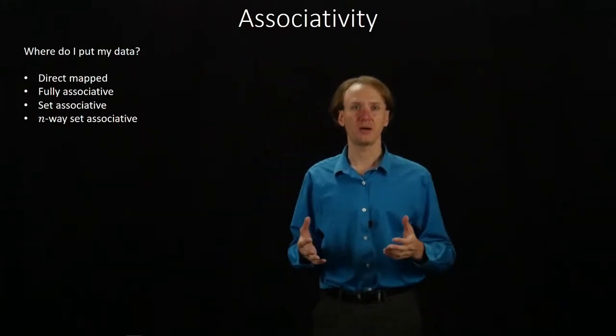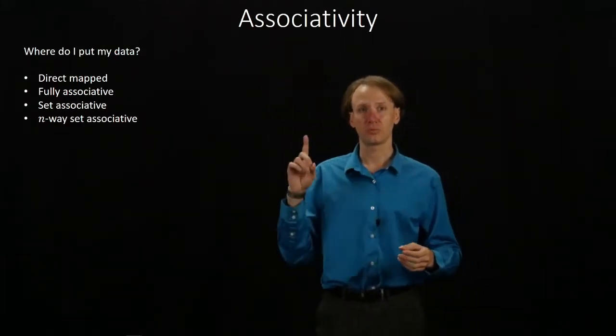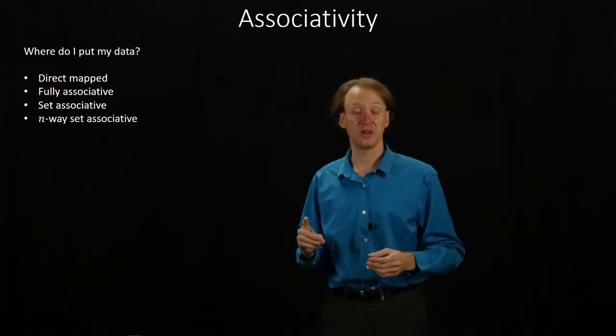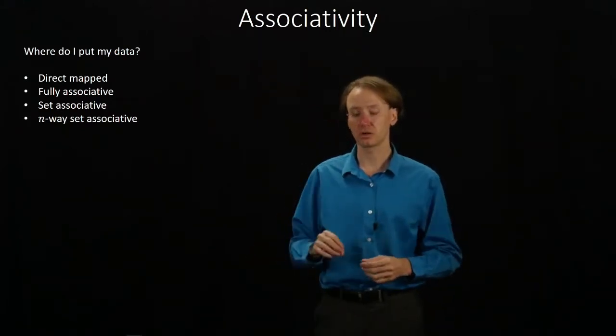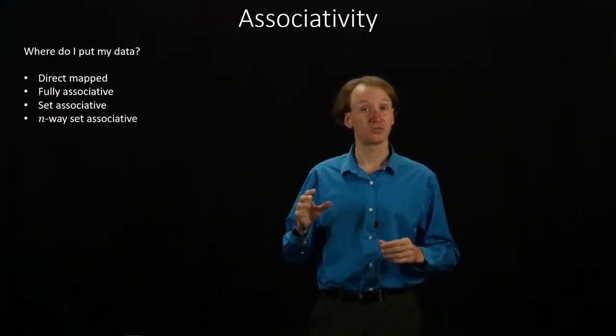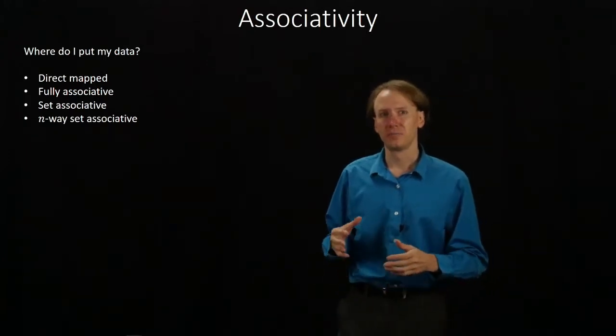In a direct mapped cache, there is exactly one place I can put a specific piece of data. It just goes there, and that's it. It makes it really easy to find, but if I've got two pieces of data that need to end up in that same slot, then I'm going to be evicting them every time the other one shows up. So that may not work too well.